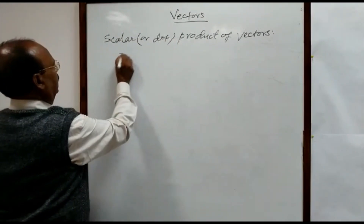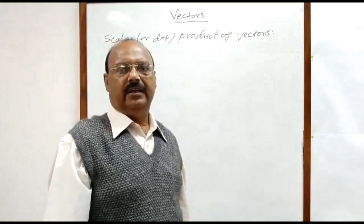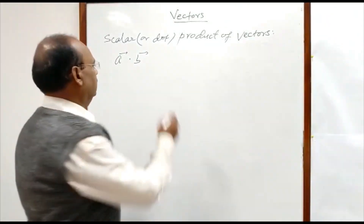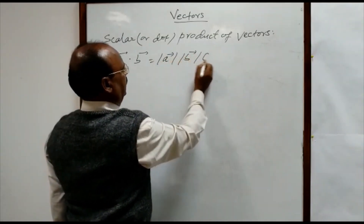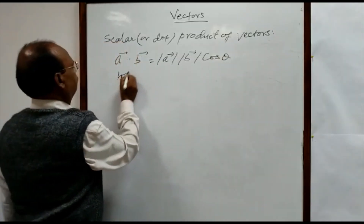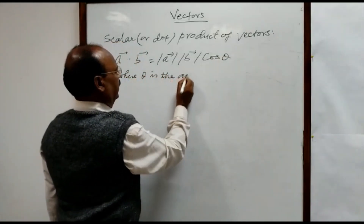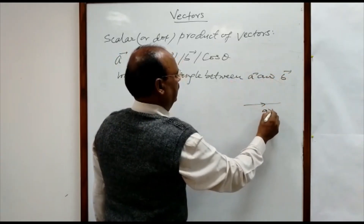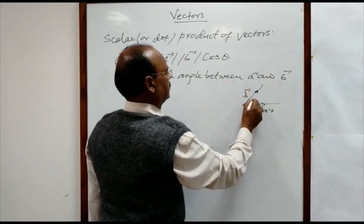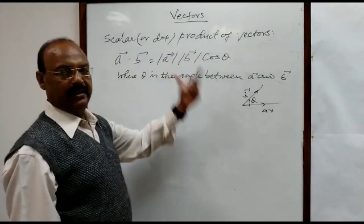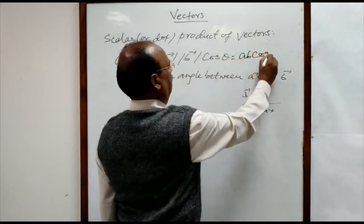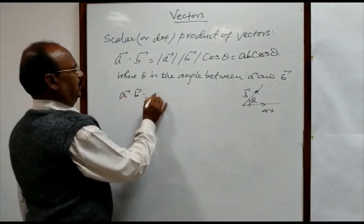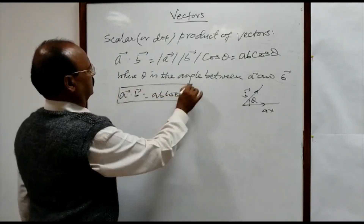Suppose that a and b are any two given vectors. Then the scalar or dot product of these two vectors is denoted by a dot b, and this is equal to the magnitude of vector a, times the magnitude of vector b, times cosine of theta, where theta is the angle between the two vectors. This can also be written simply as ab cos theta. This is the basic formula for the scalar or dot product of two vectors.